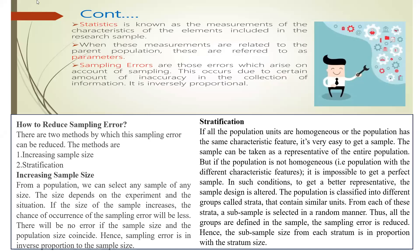Statistics is the branch of science concerned with the measurement of the characteristics of elements included in the research sample. Until and unless you actually apply statistics, you will not be able to say that the result is correct or you cannot achieve accuracy. When these measurements are related to the parent population, they are referred to as parameters. Sampling errors occur because you cannot take the whole population — errors may arise due to a certain amount of inaccuracy in the collection of information.